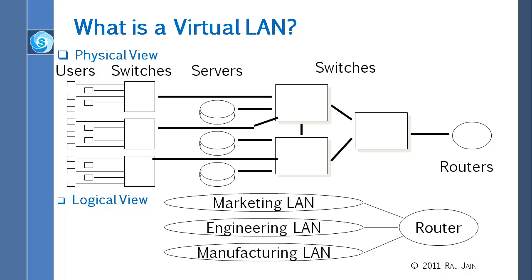The marketing people don't have to be on that campus — they could be here and still be part of marketing. Users can move but not change the LAN. Traffic between the LANs is routed. It is better to keep all the traffic on one LAN — switch when you can, route when you must. Routing is generally avoided; that's why we try to use the LAN as much as possible. It also provides better security. VLANs are good and they are wildly successful.